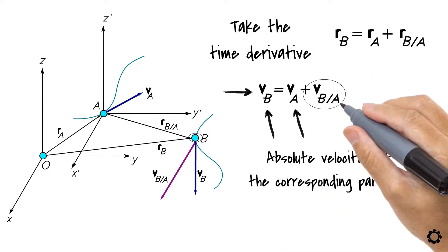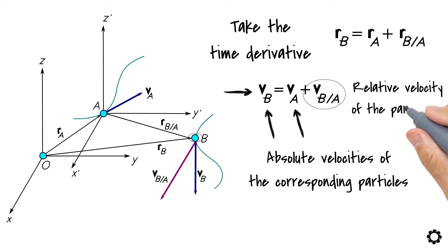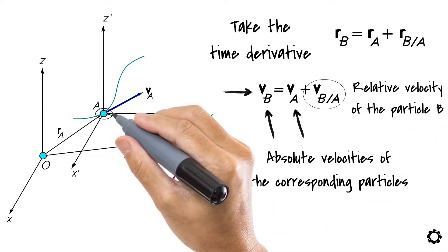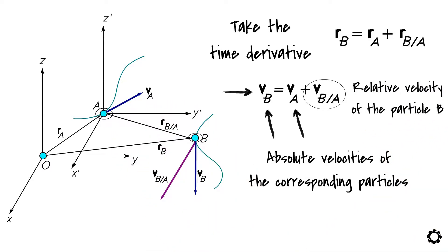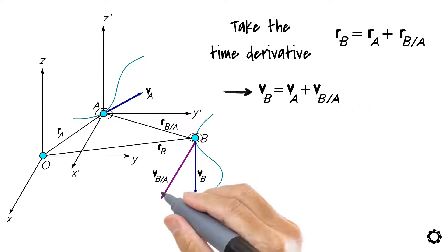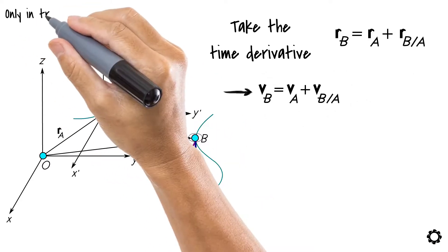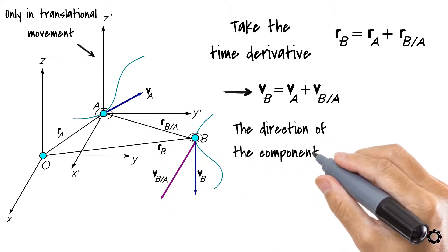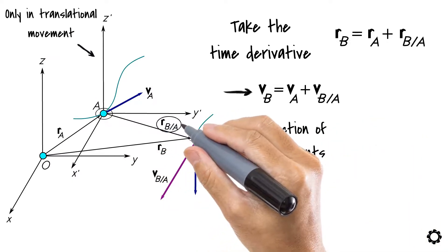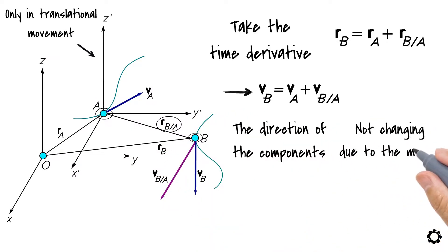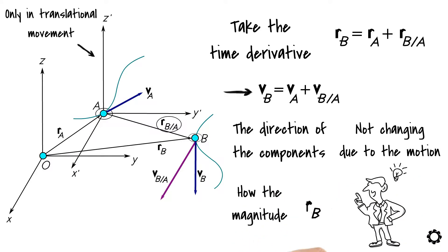Likewise, VB/A is the relative velocity of particle B with respect to particle A. Also note that because the translating frame is only in translational movement, the direction of the components of the relative position vector RB/A are not changing due to the motion, and thus we only need to consider how the magnitude of this vector changes.